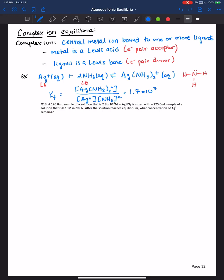Let's work an example problem together. Let's say we have a 120 milliliter sample of a solution that is 2.8 times 10 to the negative 3 molar in silver nitrate. And it's mixed with 225 milliliters of a solution that is 0.1 molar in sodium cyanide. After the solution reaches equilibrium, what concentration of the silver cation remains?